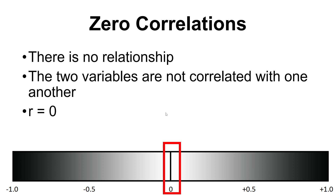The last option is a zero correlation, or null correlation — R is 0, meaning there's not actually a relationship between our two variables. They don't correlate with one another at all.